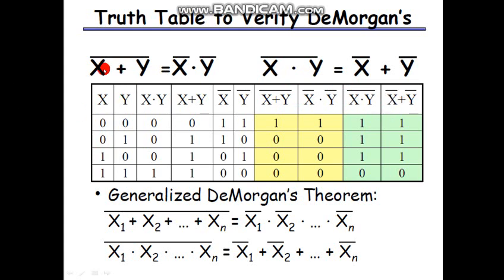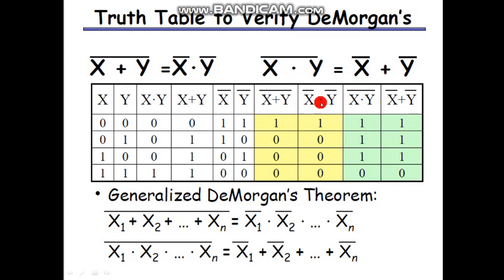To prove the first theorem, we observe columns seven and eight, which are marked in yellow. If you observe those two columns, you will see that they are the same, confirming that (x plus y) whole bar equals x bar dot y bar.